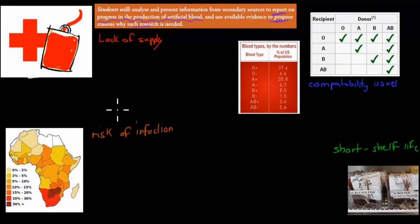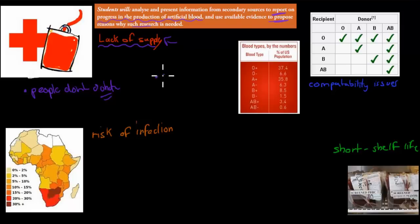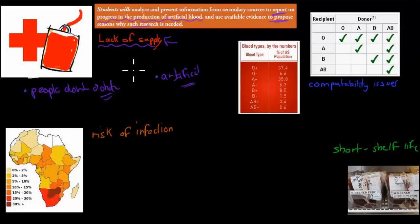There are a couple of reasons. First, because we have a lack of supply — people don't donate enough blood, and because of that we don't have enough blood in our supplies. So if we can make artificial blood — remember, artificial means human-made — we can make blood ourselves in the laboratory. That means we wouldn't have to rely on people donating blood, so that's one of the reasons why we need to make artificial blood.